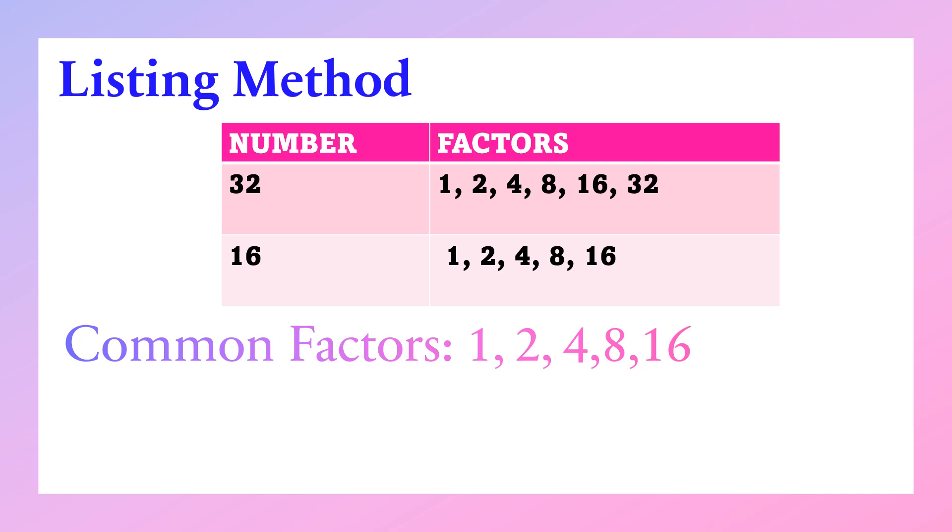Again, when we say common factors, those are the numbers that are the same. So, the common factors in our given are 1, 2, 4, 8, and 16. Those are the common factors of 32 and 16. And now, the greatest common factor of 32 and 16 is 16.